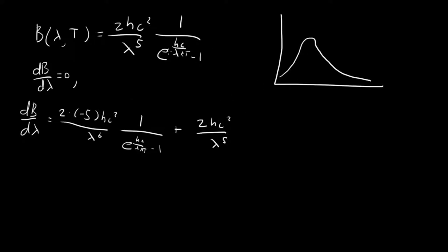Then we got to take the derivative of this guy. We're going to pull out a minus one e to the hc over lambda kt minus one squared times the derivative of this guy in here. We have e to the hc over lambda kt, and then chain rule, we take the derivative, which gives us minus hc over lambda squared kt.